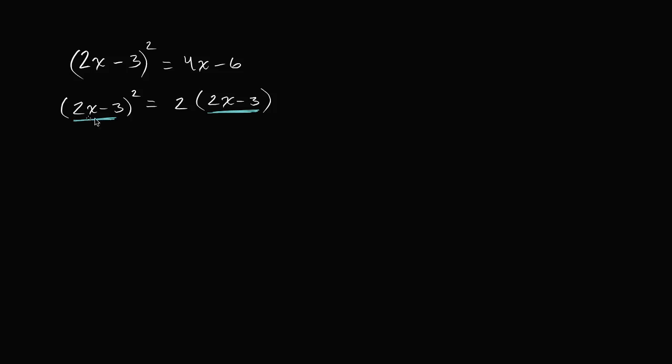So let's just replace 2x minus 3. We'll do a little bit of a substitution. Let's replace that with p. So let's say that p is equal to 2x minus 3. Well, then this equation simplifies quite nicely. The left-hand side becomes p squared, p squared is equal to 2 times p. Because once again, 2x minus 3 is p. And now we just have to solve for p.